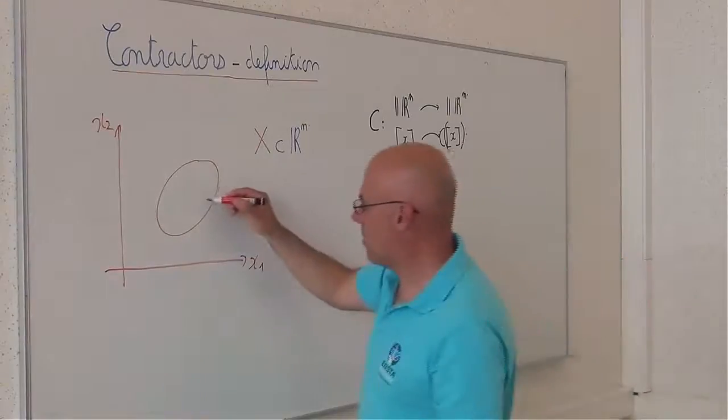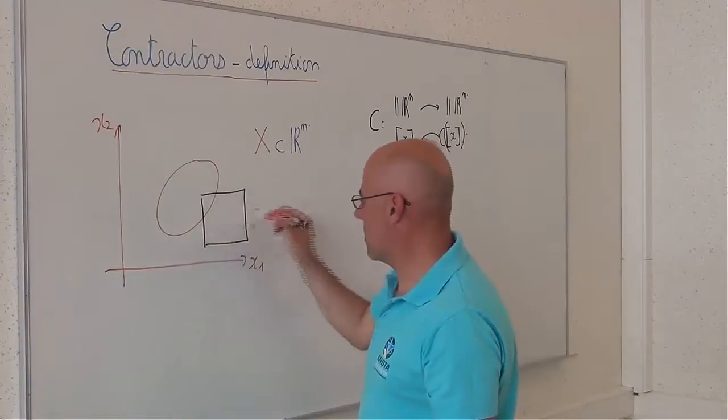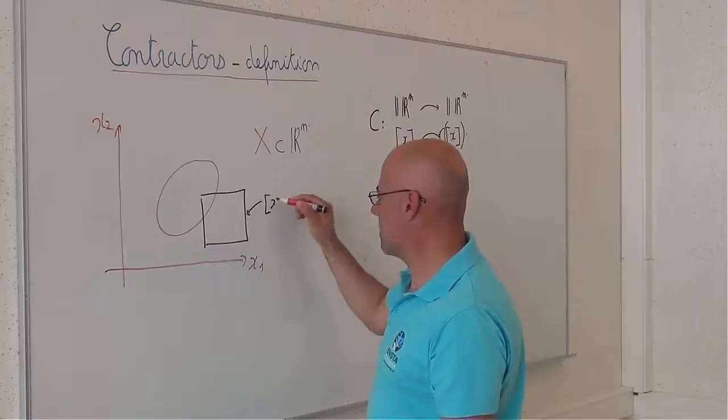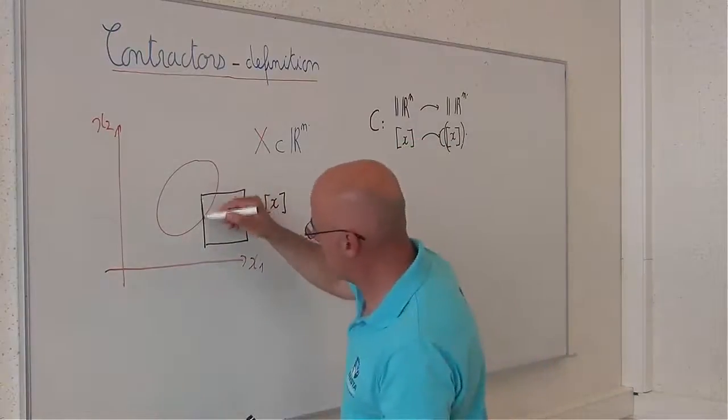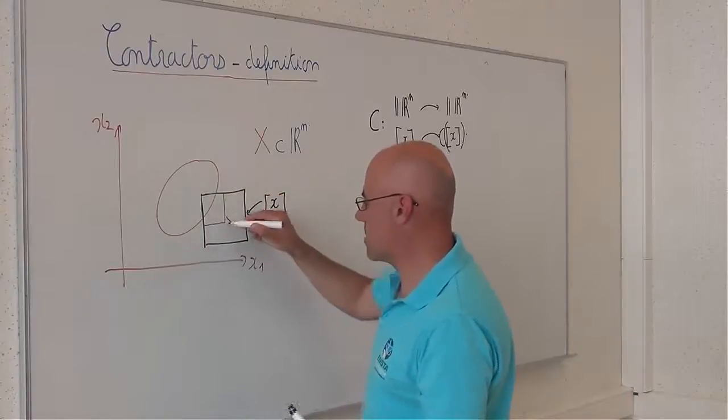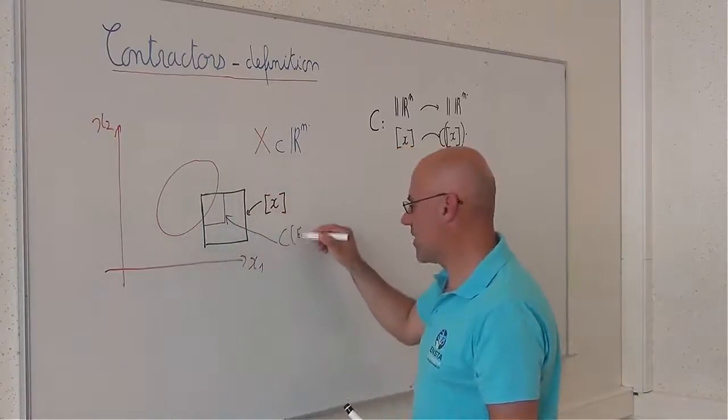If I take a box like this one X, then the image could be this box and this box would correspond to C of X.